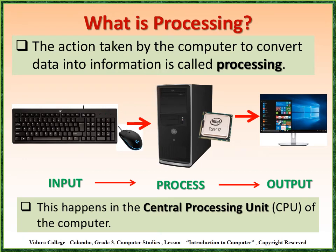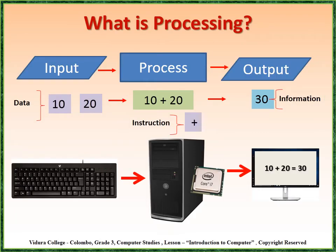Hope you can remember how the computer works. Let's recall it: input, process and output. Now you know what is input and how to input data using input devices. Now we are going to learn what is processing — that is the next step. The action taken by the computer to convert data into information is called processing. This happens in the central processing unit of the computer. Here you can see a picture of a central processing unit placed inside the system unit.